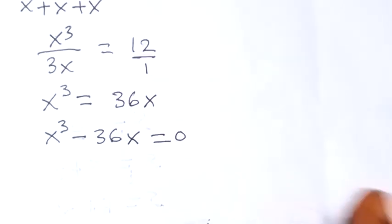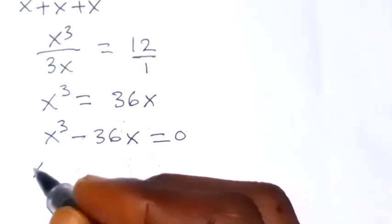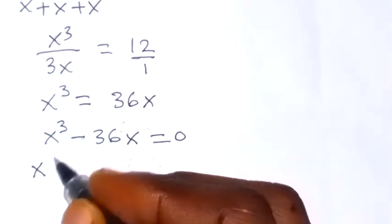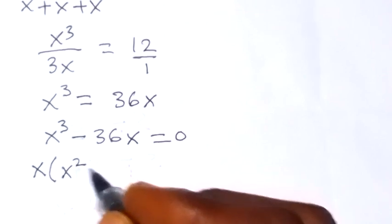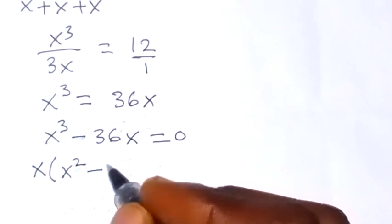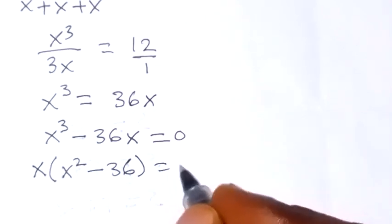From here, x is common, so we can bring x out. We have x into bracket x squared minus 36, which equals to 0.